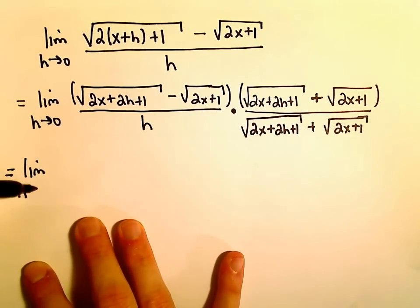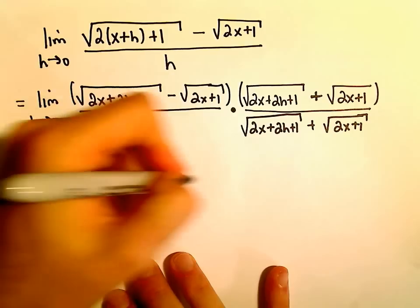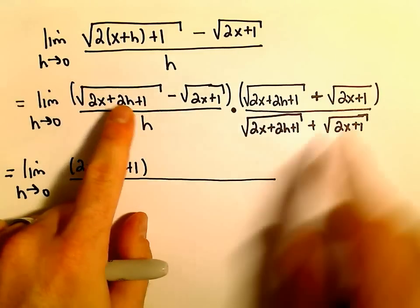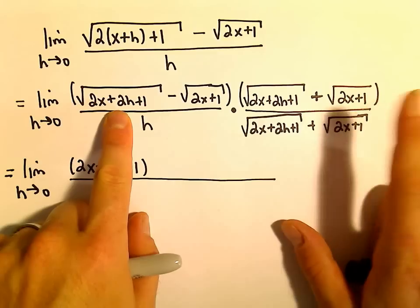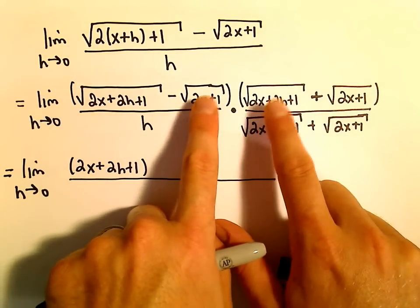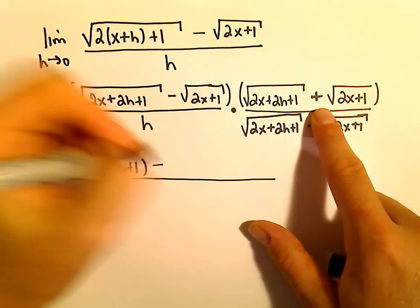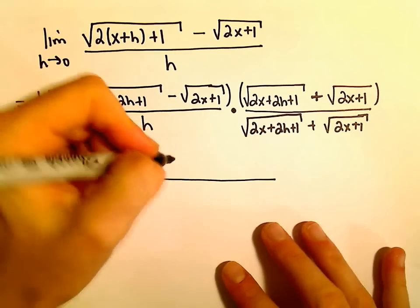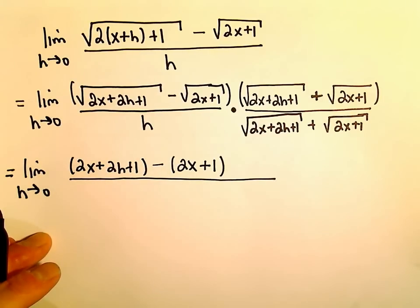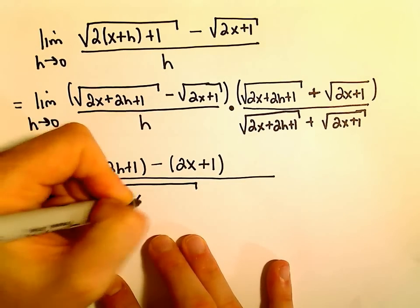So we'll have the limit as h approaches 0. The square root of 2x plus 2h plus 1 times the square root of 2x plus 2h plus 1 is just going to give us the quantity 2x plus 2h plus 1. When we multiply the outside terms — the square root of 2x plus 2h plus 1 times the square root of 2x plus 1 — and the inside terms, we get the exact same thing but with a negative, so those cancel out. Then we have a negative times a positive: the square root of 2x plus 1 times itself gives us just 2x plus 1. Be careful to put this in parentheses because we'll have to distribute the negative out. In the denominator, I'm not going to multiply anything out — I'll just leave it all there together.